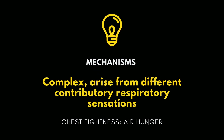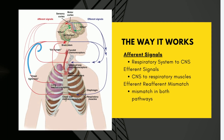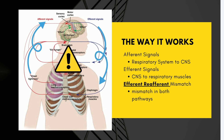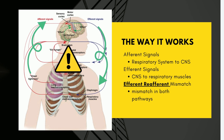The mechanisms underlying dyspnea are complex as it can arise from different contributory respiratory sensations such as chest tightness or air hunger. It arises from a variety of pathways including generation of afferent signals from the respiratory system to the central nervous system, efferent signals from the central nervous system back to the respiratory muscles, and particularly when there is a mismatch in the integrative signaling between the two pathways — this is termed efferent-reafferent mismatch.